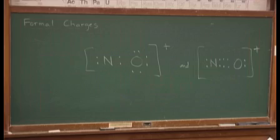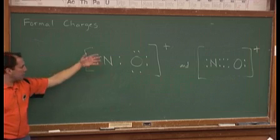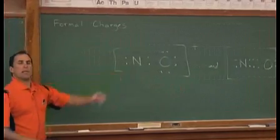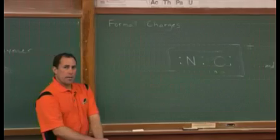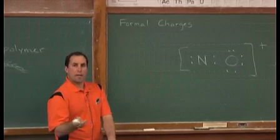So let's say that two students propose a couple of Lewis dot structures for these things. Student A, student B, they have the correct number of electrons, they've got it boxed up with a positive sign, everything looks pretty good. We can evaluate these and say, well how closely do these models resemble what we actually observe for the NO+ polyatomic ion?